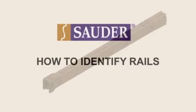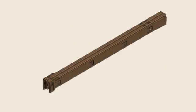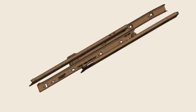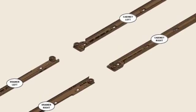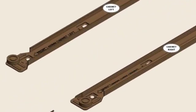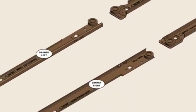To identify rails, begin by separating the cabinet rails from the drawer slides. The parts are marked cabinet right, cabinet left, drawer right, and drawer left. You will use the cabinet rails for this step and the drawer slides in a later step.